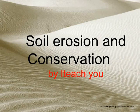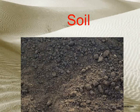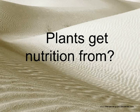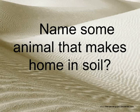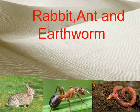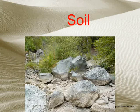Soil erosion and conservation. The upper layer of earth is called soil. Plants get nutrition from soil. Some animals that make their home in soil include rabbit, ant, and earthworm. Soil is also formed by the breaking down of rocks into small pieces.